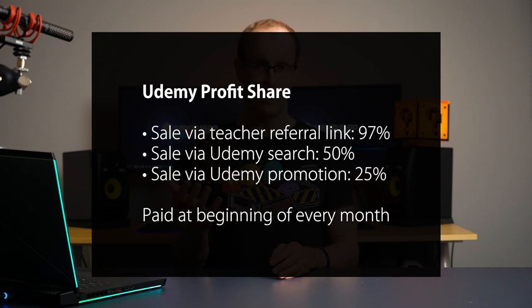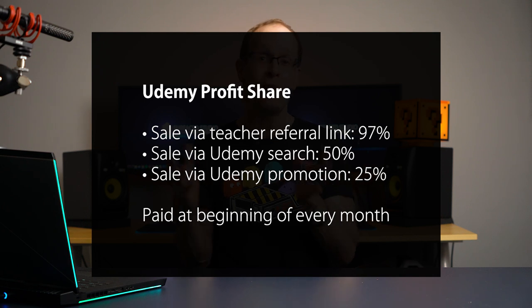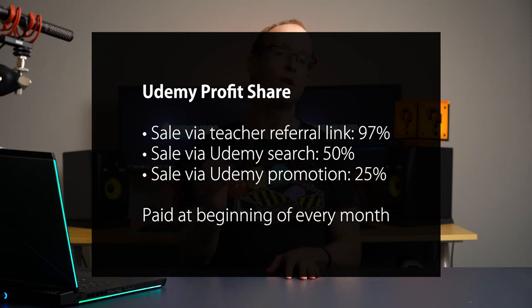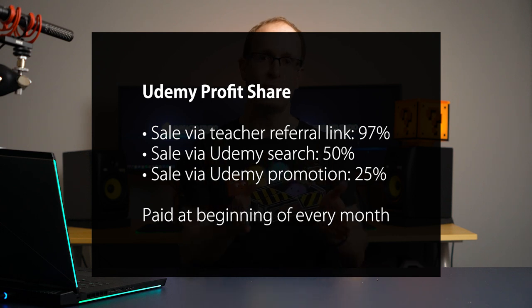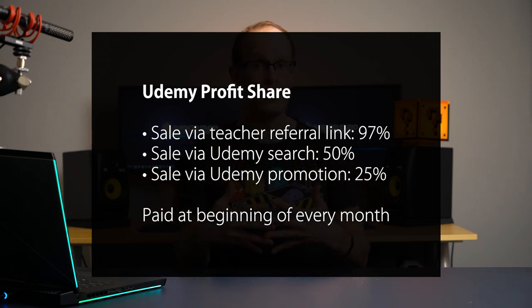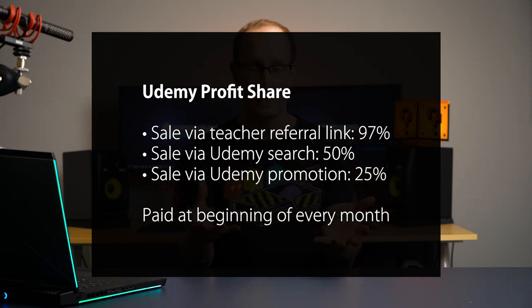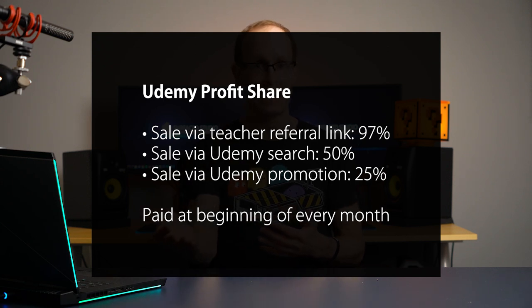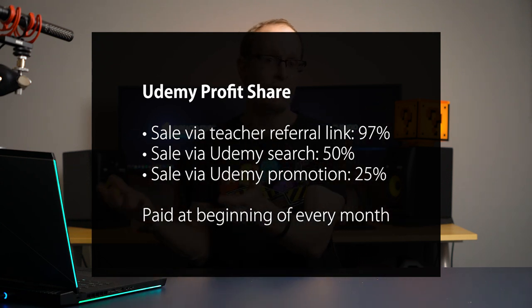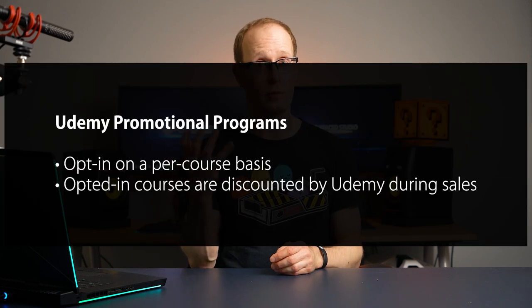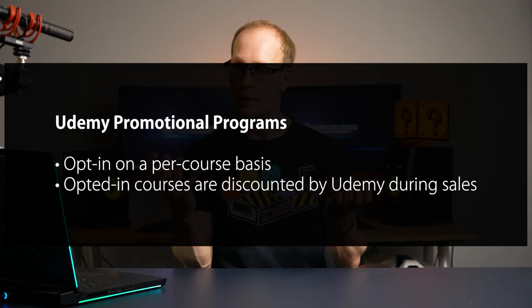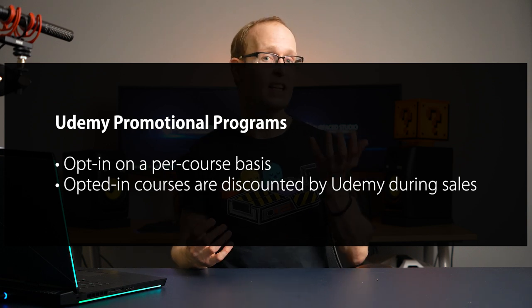The money you get on Udemy depends not on how much time people spend watching but on how many courses they buy and at what price. If the student purchases through a referral link that you've shared on your social media or website, you get 97% of the revenue from that sale. If someone simply searches Udemy and finds your course and purchases it, you get 50% of the revenue. If the student comes through a promotion that Udemy is running — like a discount sale they advertise on social media or via email marketing — you will get 25% because Udemy did most of the advertising work. One thing with Udemy is that it constantly seems to have everything on sale.